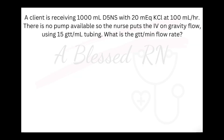Let's look at another example. A client is receiving 1,000 mL D5 normal saline with 20 mEq of KCL — potassium chloride — at 100 mL per hour. There is no pump available, so the nurse puts the IV on gravity flow using 15 drops-per-mL tubing. What is the drops-per-minute flow rate?